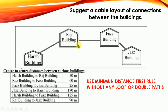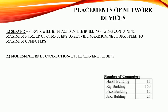We must maintain minimum distance and no loops. For example, if we have already connected buildings via one path, and the third minimum distance creates a loop — say Ras to Jazz building is already connected via an existing path — we will avoid that connection and take the next minimum distance instead.